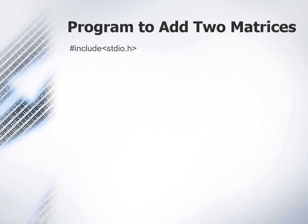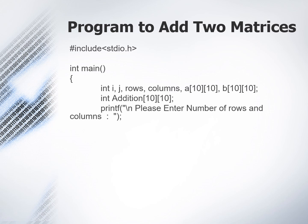We will start with the header of the program: hash include stdio.h. Then we will start the main program with integer main parenthesis. Then first of all we will declare the variables required for the program: integer i, j, rows, columns, a matrix A of size 10 by 10, a matrix B of size 10 by 10, and another matrix addition of size 10 by 10.